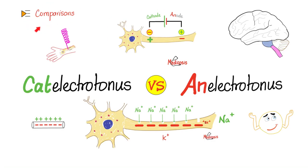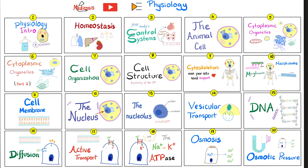It's Medicosis Perfectionalis, another video in my comparisons playlist. Today we'll compare between cat electrotonous and an electrotonous. Why cat? Because cathode. Why an? Because of the anode. Today will be a quick review. If you want the original discussion, check out my physiology playlist.